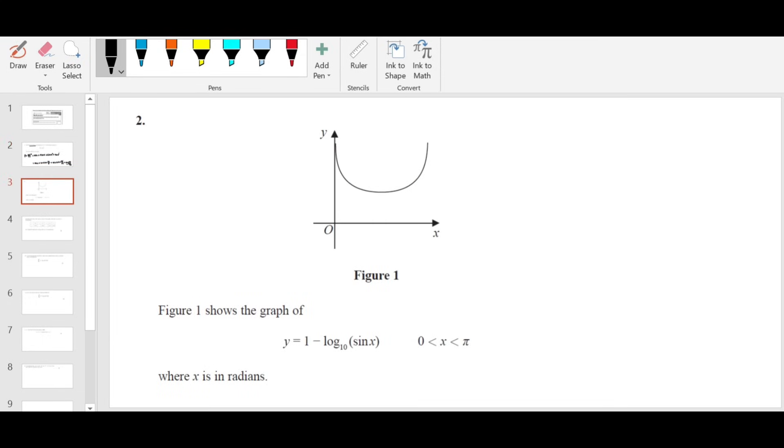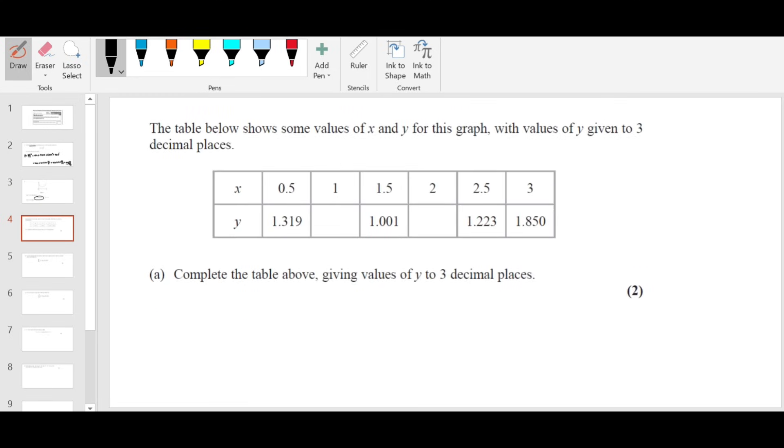Question number 2. We have a graph given and the function representing the graph: y equals 1 minus log sin x to the base 10. We have a table of values and there are some missing values. They want here to complete the table to 3 decimal places. You can replace x by 1 and 2 separately and get the value. But let's say there are more values missing, then you can use a table function in your calculator.